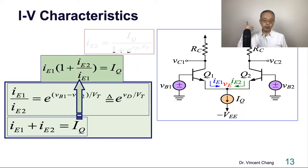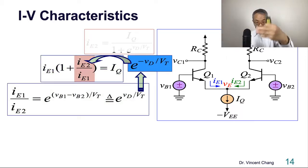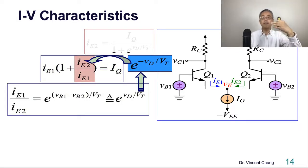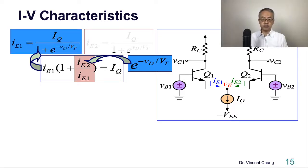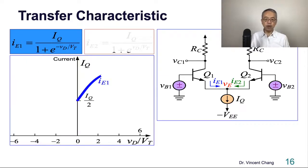Similarly, we can obtain IE1. IE1 can be expressed using the ratio in the opposite direction — because the exponential is 2 over 1 — giving exponential of negative VD divided by VT. So now both IE1 and IE2 have been solved.